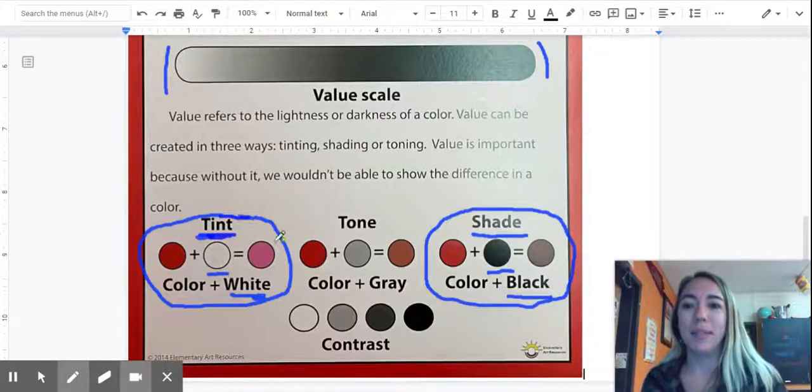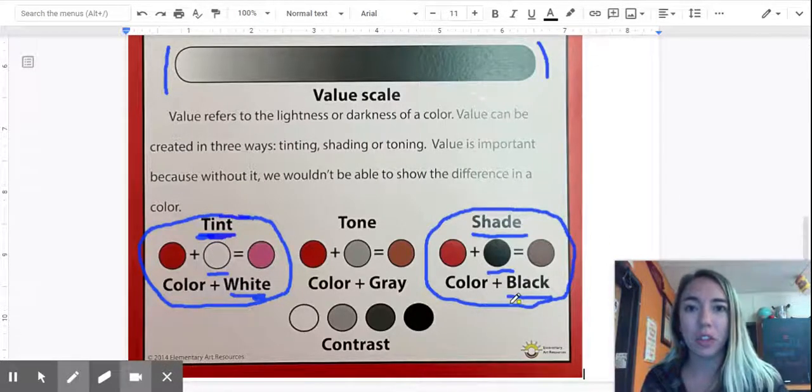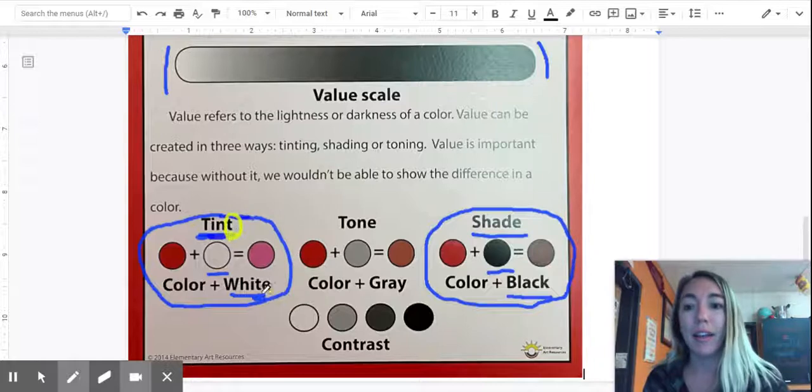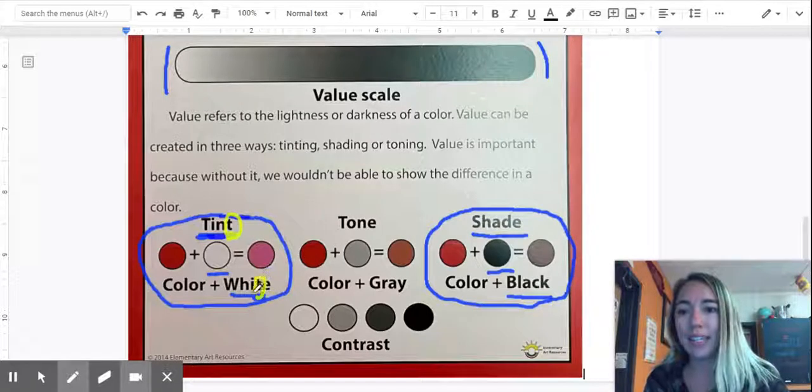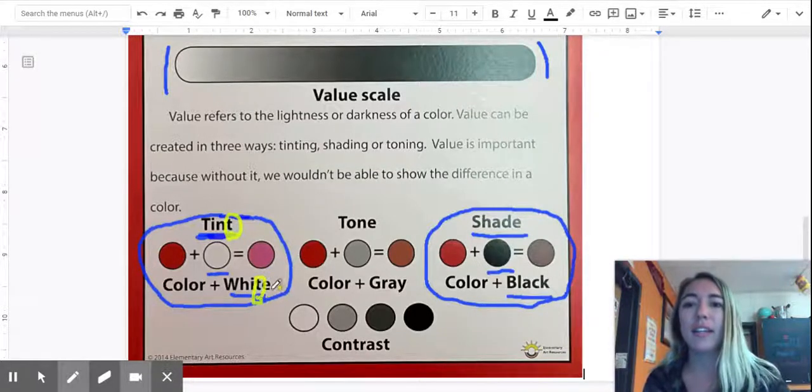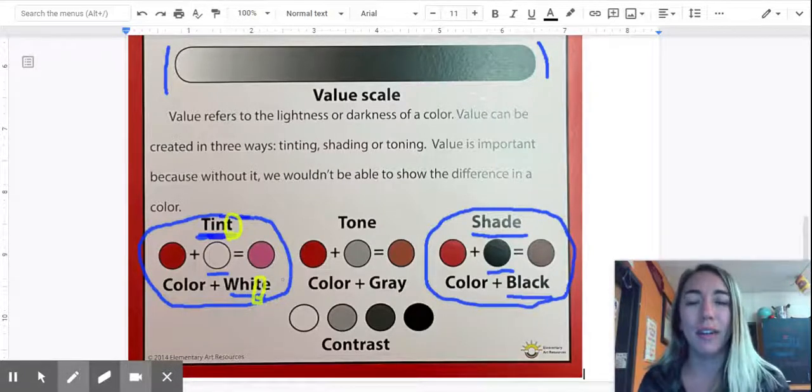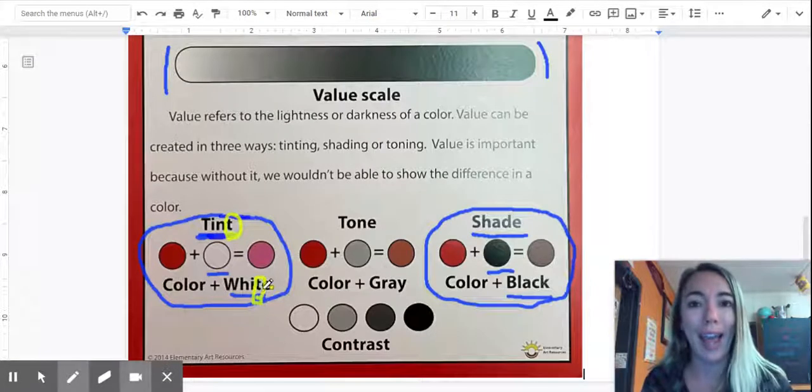To help us remember the difference between tints and shades, here's a little trick that I use. Tint. You can hear the t at the end. Tint. And then when I say the word white, the last sound that I hear is the t towards the end. So I like to think tint, white. If I hear the t, I know that tint means I add white.